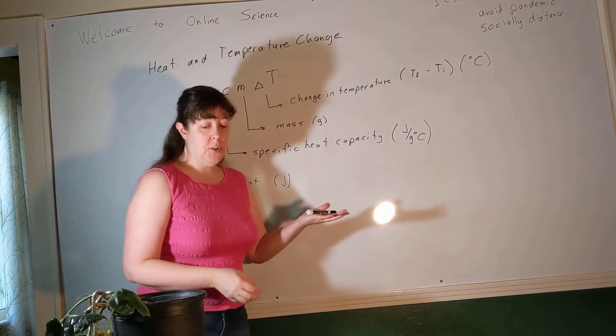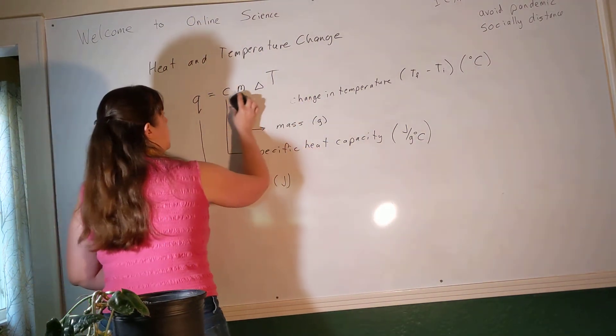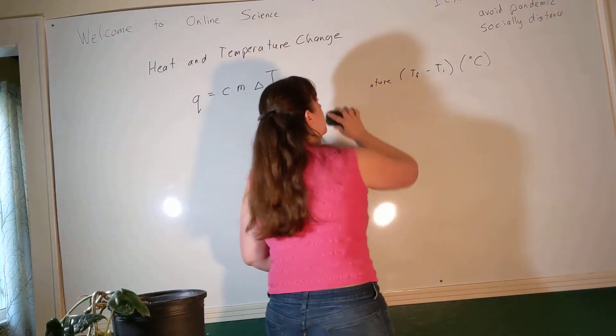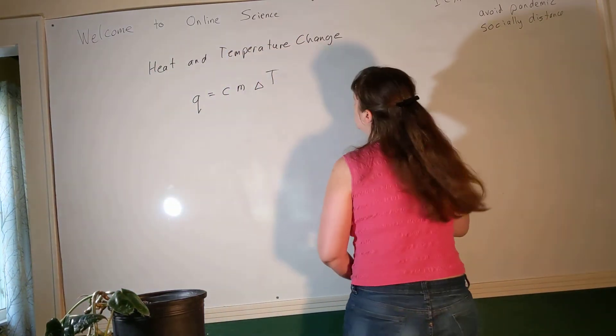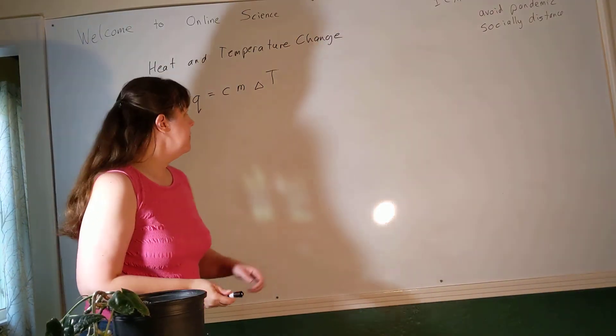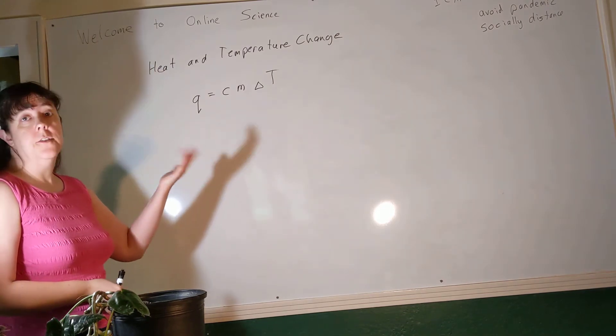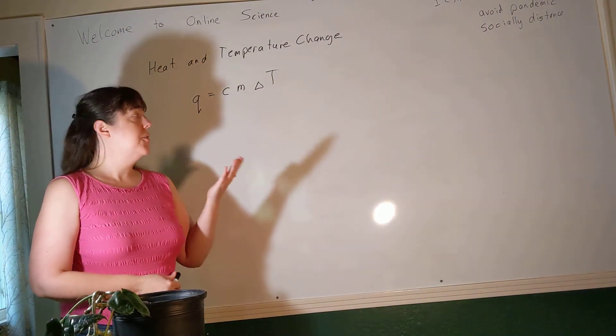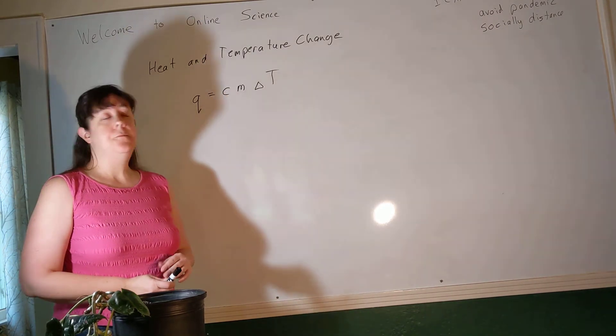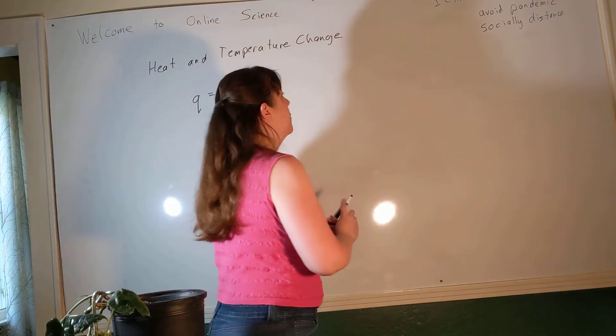So the simplest way to use this equation is just to plug in values of C, M, and delta T. Obviously, we can rearrange the equation to solve for different variables, but let's start for just solving for the variable that's already isolated. Mass, we understand, right? If you want to know an object's mass, you put it on a balance, and you write down the number. Delta T, we understand. Delta T, you just use a thermometer, and you write down the number. C is the one that's a little weird. So you're going to have to find some tables. You're going to have to find the specific heat capacity written down somewhere. So here are some values of C for different substances.